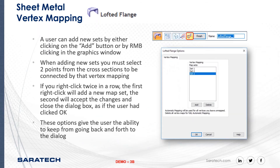A user can add new vertex mapping sets by clicking the Add button or right-clicking in the graphics window. When adding new sets you must select two points from the cross sections to be connected by the vertex mapping. If you right-click twice in a row, the first right-click adds a new set and the second closes the dialog box. Let me show you a short video on this so it's easier to demonstrate.